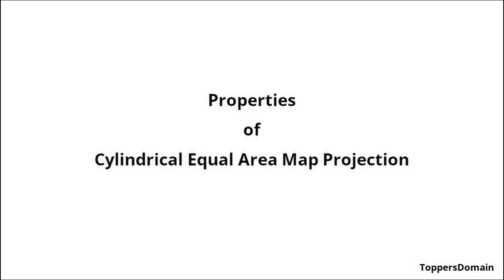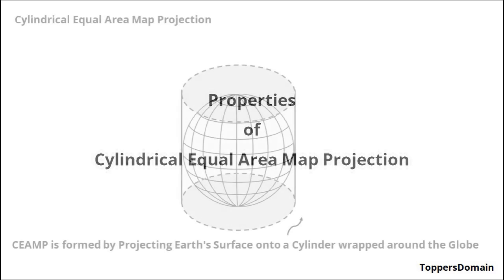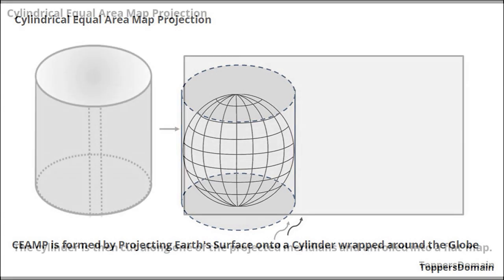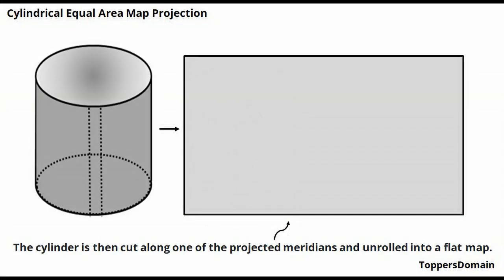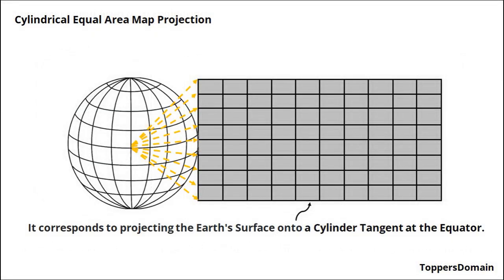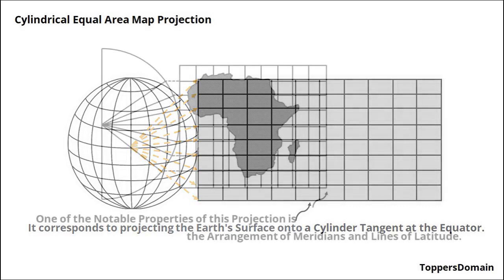Before we delve into the details, let's understand the basic concept behind the Cylindrical Equal Area Map Projection. The projection involves wrapping a cylinder around the Earth and projecting its surface onto the cylinder. It corresponds to projecting the Earth's surface onto a cylinder tangent to the equator, as if from a light source at Earth's center. This method preserves area, making it an equal area projection.